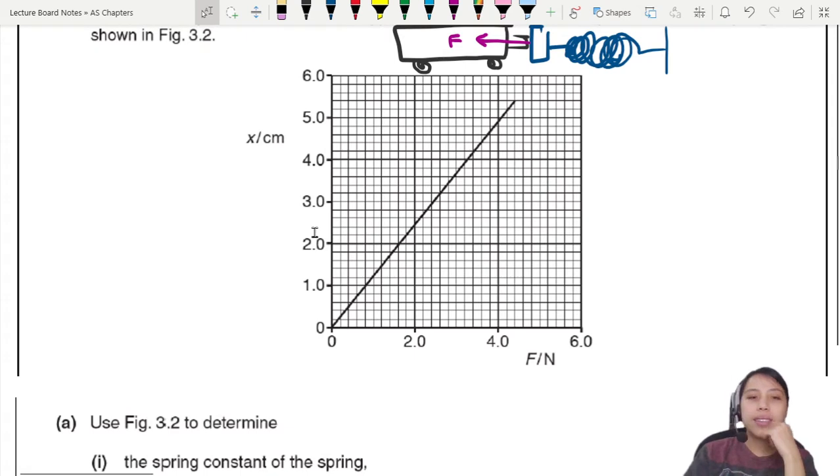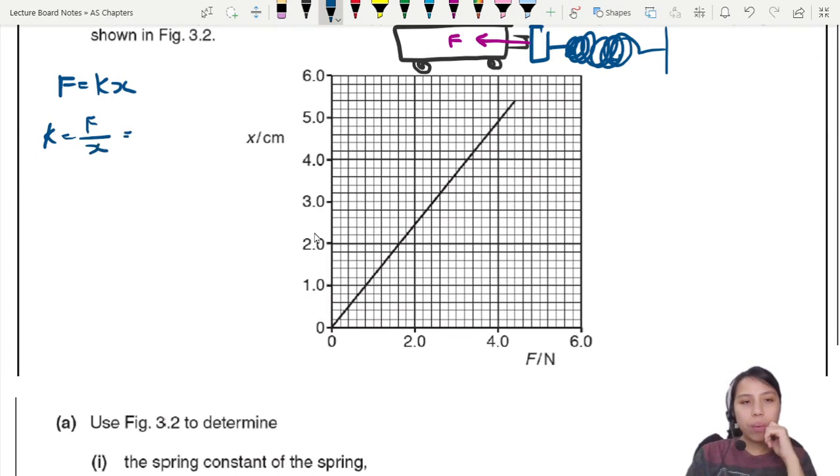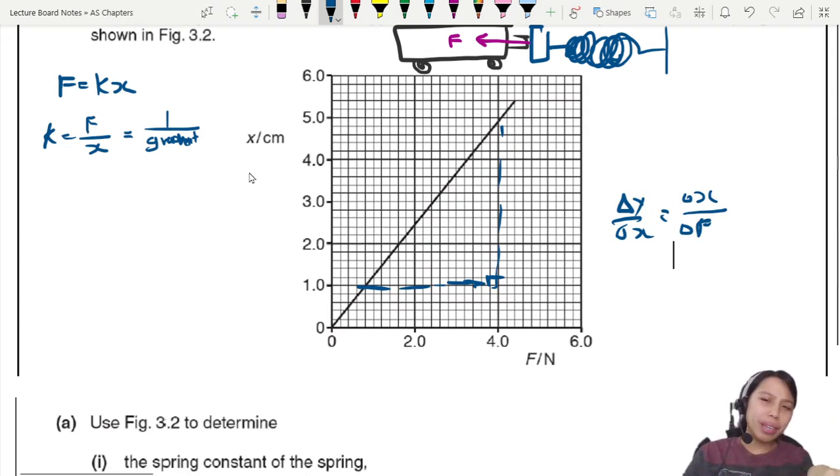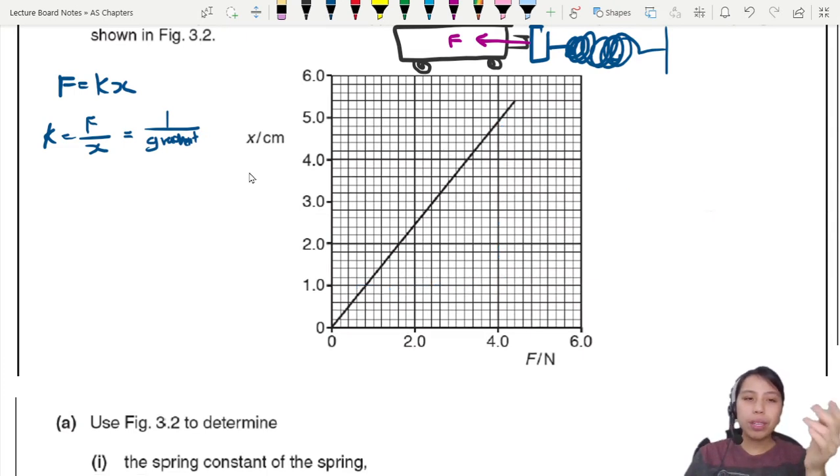For spring constant k, in Hooke's law F = kx, there are a few ways to find k. You can take k = F/x. This graph is upside down - one over the gradient of this graph would give x/F, which is exactly opposite to F/x. I wouldn't recommend the gradient method because the axes are swapped. Let's stick with F/x.